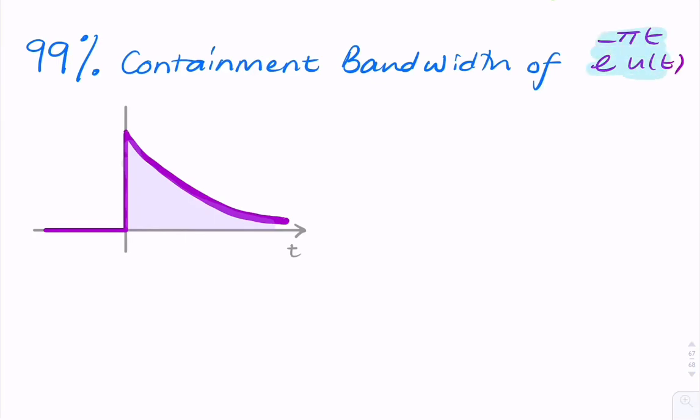Say we had a single-sided exponential signal and we were asked for the containment bandwidth or the equivalent bandwidth of that signal. That's like asking for the range of frequencies for which 99% of the energy of the signal resides. So because we're being asked for the bandwidth, it means we need to work in the frequency domain.